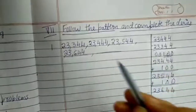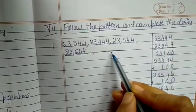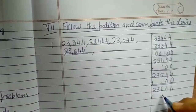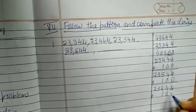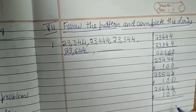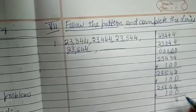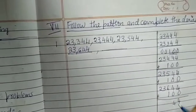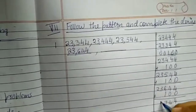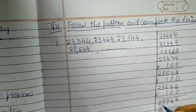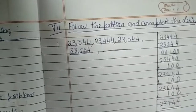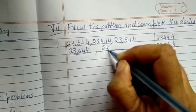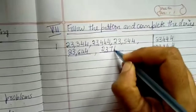Next, we want to find the last blank. So let's add 100 again. Plus 100. So 4 plus 0 is 4, 4 plus 0 is 4, 6 plus 1 is 7, 3 as it is and 2 as it is. So we got the final answer: 23,744.